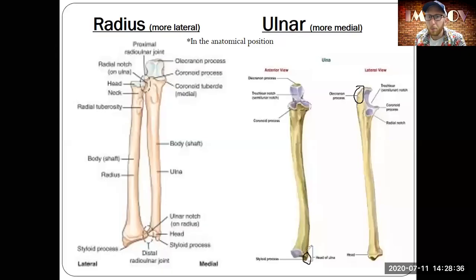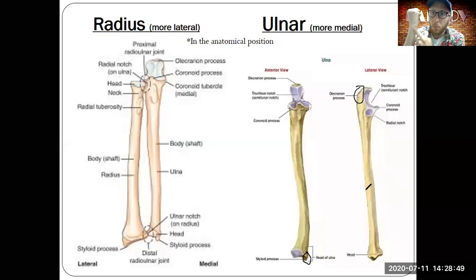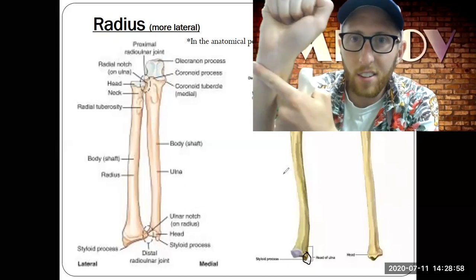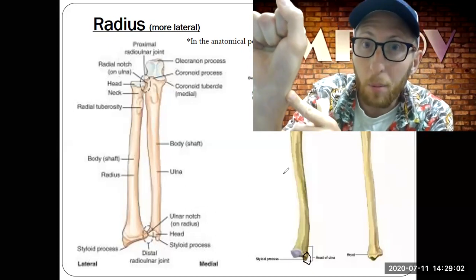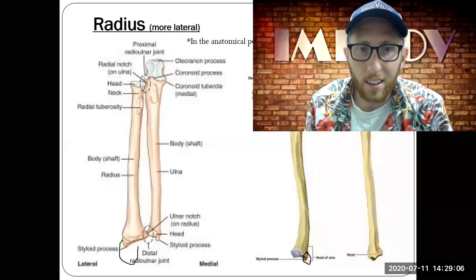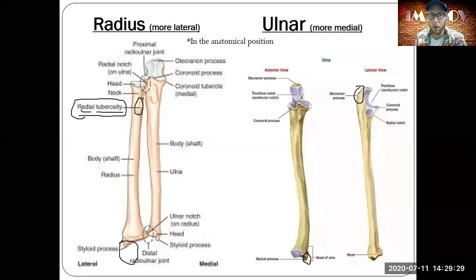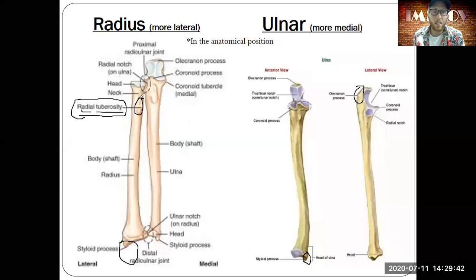Down here you can see the styloid process, a small bump at the wrist. On the pinky side, feel down at your wrist and you should feel a small bump — that's the styloid process of the ulna. On the thumb side, there's also a bump — the styloid process of the radius. More proximally on the radius is the radial tuberosity, a bump sticking out to the side that has a lot of muscle attachments.